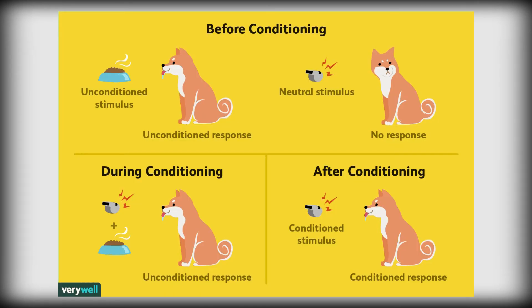Therefore, classical conditioning is the form of learning whereby a conditioned stimulus becomes associated with an unrelated unconditioned stimulus in order to produce a behavioral response known as a conditioned response.